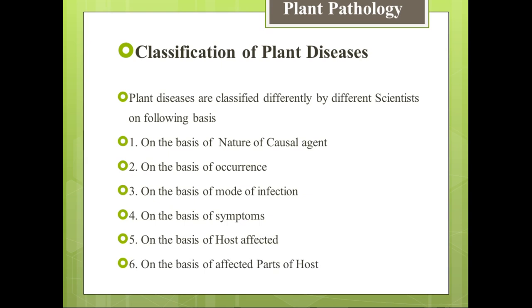In cheap basis ke lihaz se mokhtlif scientists ne plant diseases ko mukhtlif classify kiya hai. Aaj hum inko one by one discuss karenge. Number one is classification on the basis of nature of causal agent — causal agent ki nature ke base pe plant diseases ki classification kya hai.